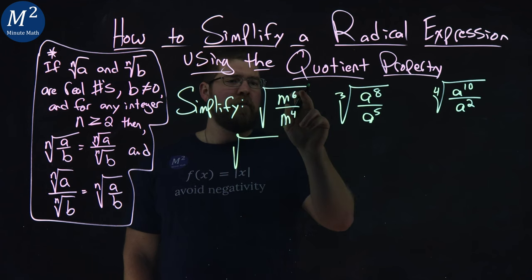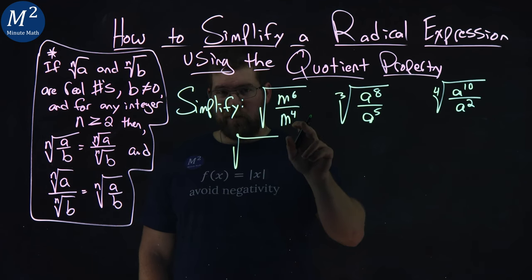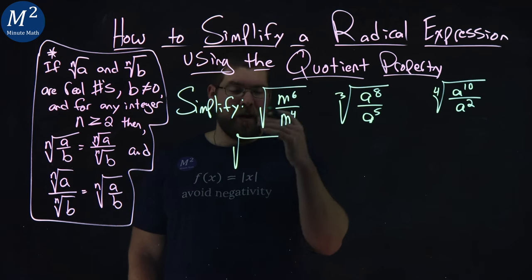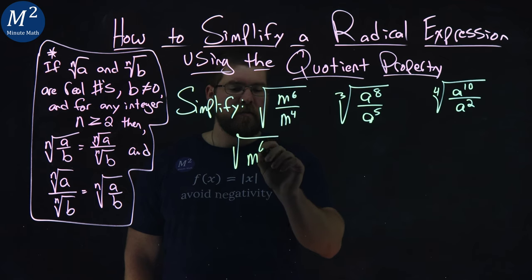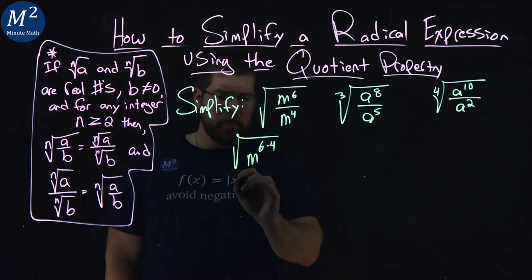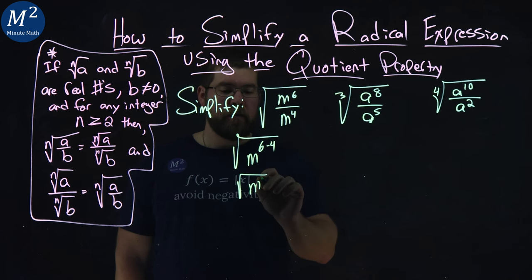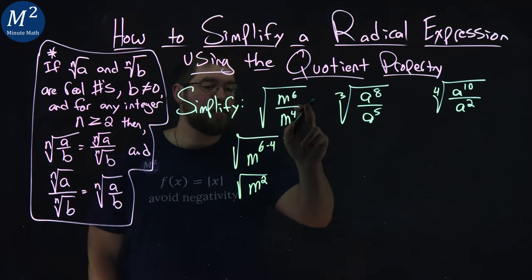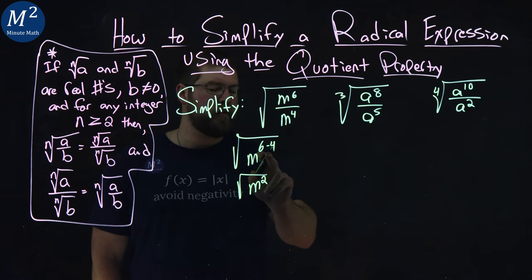We know that if we take the square root of m to the sixth over m to the fourth, we can subtract the exponents. So that's m to the sixth minus four power. From there, m to the sixth minus four is m squared. Again, division turns into subtraction with the exponents.